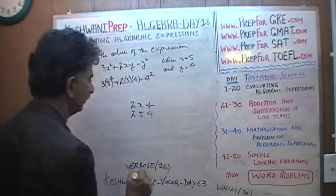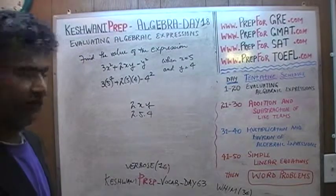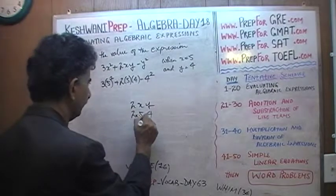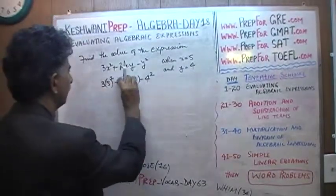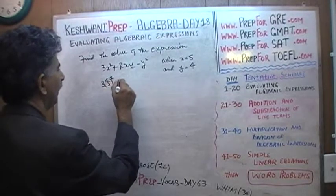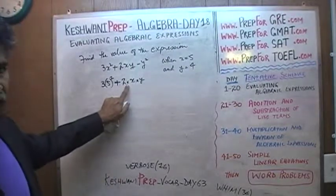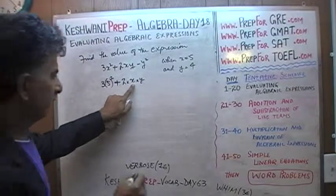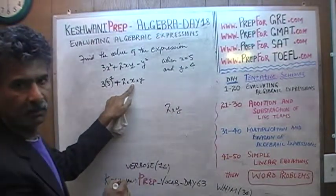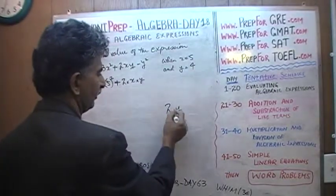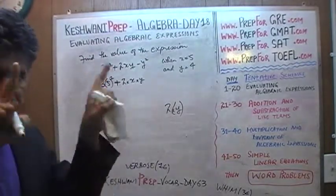We could write it as 2, 5, 4 — but that looks like 254. We could use dots, but dots are very easy to miss. We could use a multiplication sign, but that has a chance of getting confused with x. So if I want to say 2 times y, you don't know if I'm talking about 2 times x times y, or just 2 times y. It's easier to just put parentheses around it — your eyes can see right away that it is 2 times (y), because the parenthesis separates the whole thing very clearly.